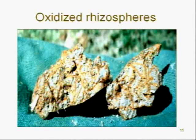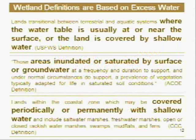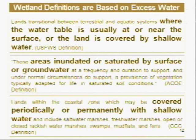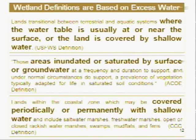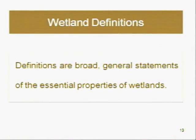Clearly, an excess of water is the one wetland feature upon which all others are dependent, and this is reflected in all wetland definitions. Before discussing the implications of the wetland definitions in the Coastal Act, I'd like to distinguish between wetland definitions, wetland parameters, and wetland field indicators. These are common terms in the context of technical wetland delineation, but they are often confused or misapplied. Wetland definitions are broad general statements of the essential properties of wetlands. Although all wetland definitions are based on recurrent conditions of excess water, there is no single scientifically correct definition, because all wetlands occur along a moisture gradient.